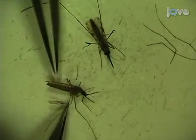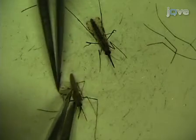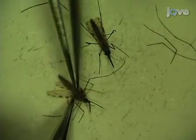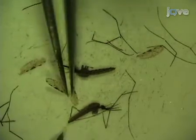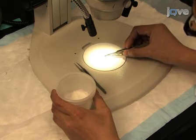Using fine forceps, remove the wings and legs of the mosquitoes to immobilize them. Once the wings have been removed, place the mosquitoes in a humidified plastic cup to prevent them from desiccating.